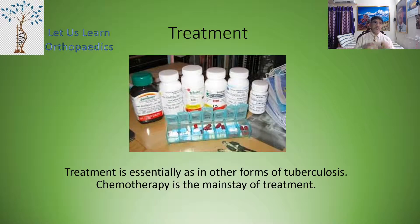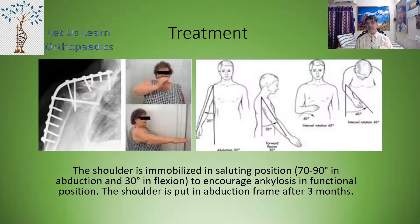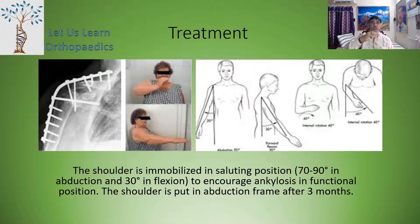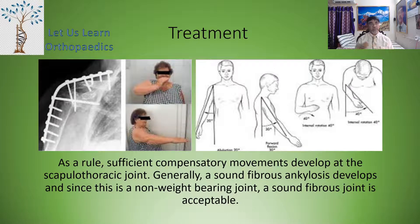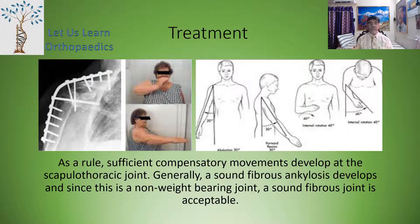Treatment is essentially as in other forms of tuberculosis — chemotherapy is the mainstay. The shoulder is immobilized in a saluting position, that is, 70 to 90 degrees of abduction and 30 degrees of forward flexion. This encourages ankylosis in a functional position. The shoulder is put into the abduction frame for three months. As a rule, sufficient compensatory movement develops at the scapulothoracic joint. A sound fibrous ankylosis develops, and since this is a non-weight-bearing joint, a sound fibrous joint is acceptable.